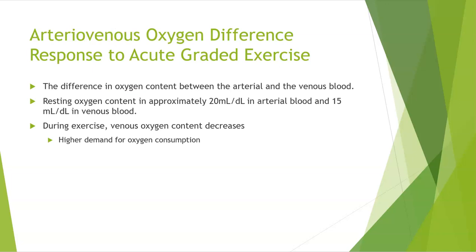The arteriovenous O2 difference response to acute graded exercise is the difference in oxygen content between arterial and venous blood. Resting oxygen content is approximately 20 milliliters per deciliter in arterial blood and 15 milliliters per deciliter in venous blood. During exercise, venous oxygen content decreases, which causes a higher demand for oxygen consumption.